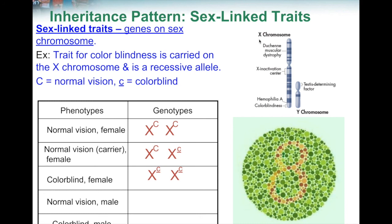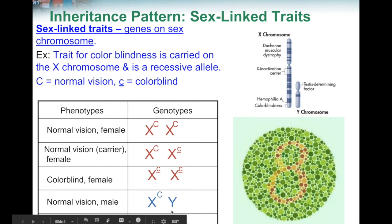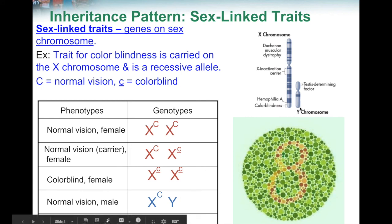For a normal vision male, you write XY. His X has a capital C superscript, but the Y does not have a C attached to it because the Y chromosome doesn't carry information about colorblindness — only the X does. For a colorblind male, you write XY, and the X chromosome has a lowercase c to show that the male is colorblind.